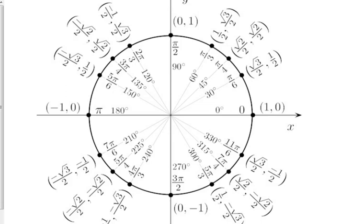These points on the axes — just think about it in terms of basic geometry. If the radius of the circle is 1, then the point on the positive x-axis is (1, 0). Forget the trig for a minute — that's just what that coordinate is. Then (0, 1), (−1, 0), (0, −1).